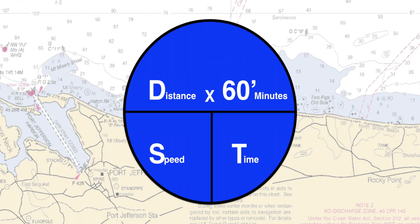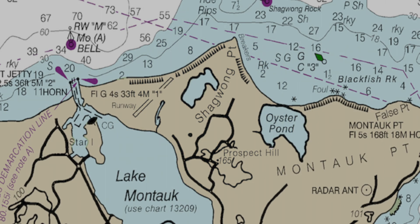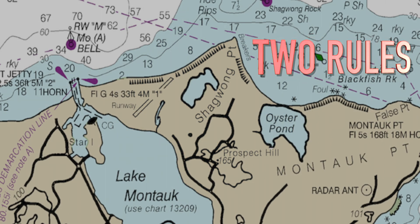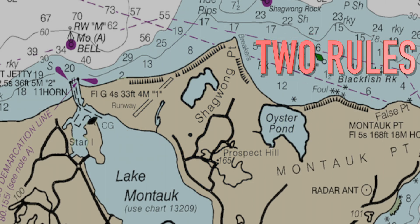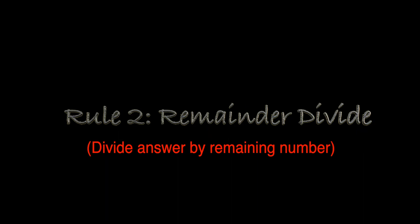You'll use this formula to easily calculate time underway, speed made good, or distance. Before we begin, you must first remember two rules when using D Street. Rule one: side by side, you multiply. Rule two: remainder divide.